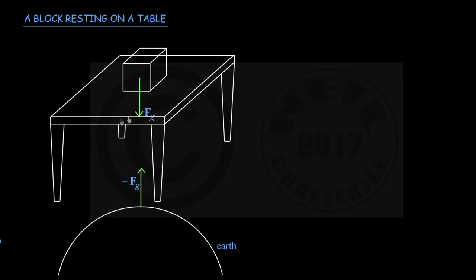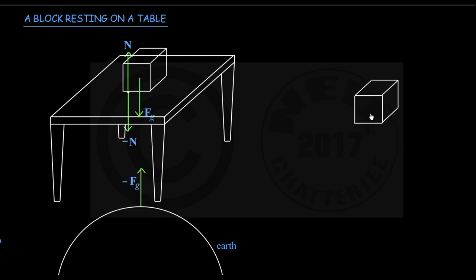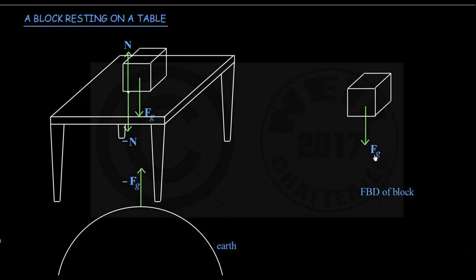Similarly, the table exerts a vertically upward normal force N on the block, and in response, the block exerts a downward force of the same magnitude onto the table, which I call minus N. Once these two pairs of action-reaction forces are shown, let us draw the free body diagram for the block — showing only the forces acting on the block and ignoring the other forces. On the block, the forces acting are Fg, the force of gravity given by the earth, and the normal force N given by the table. We do not show minus Fg acting on the earth or minus N acting on the table, because in a free body diagram we only show the forces acting on the block.